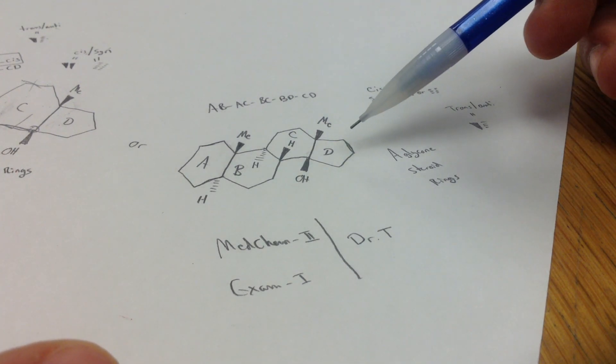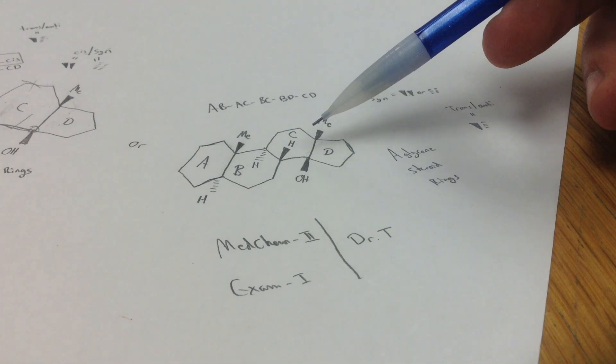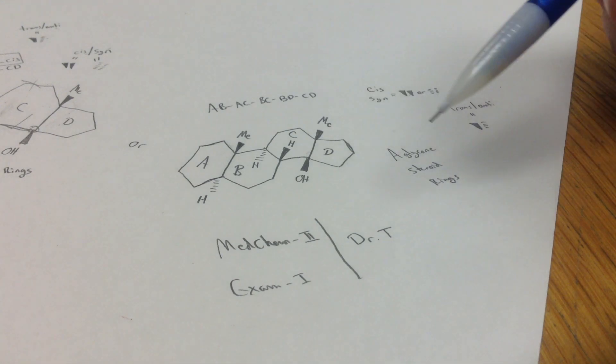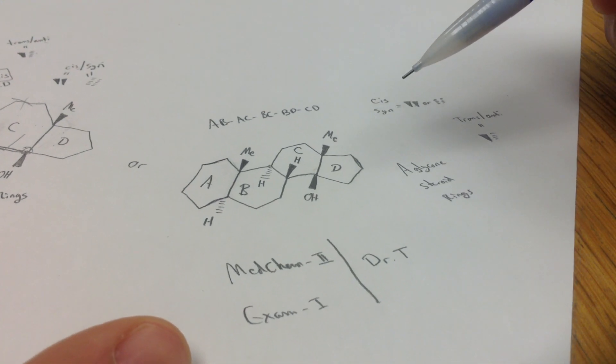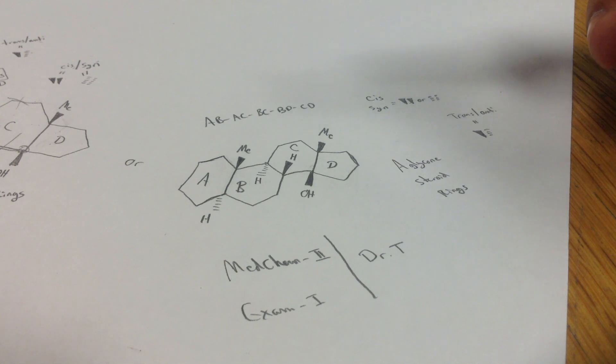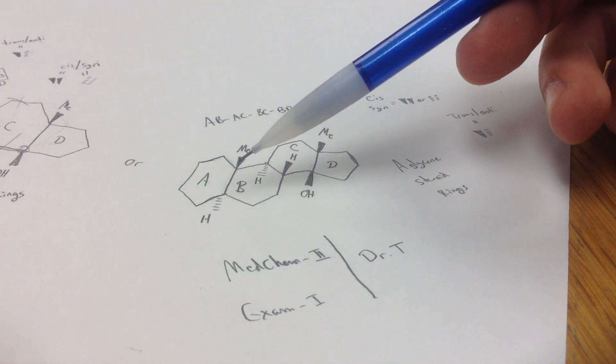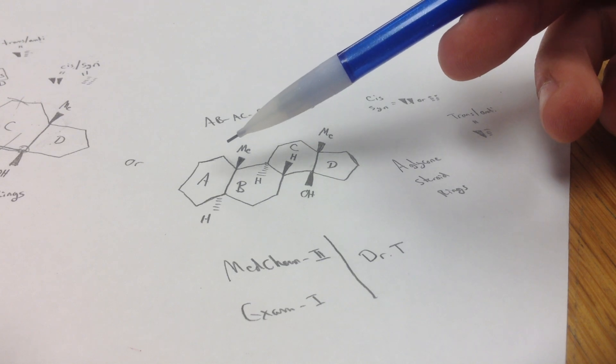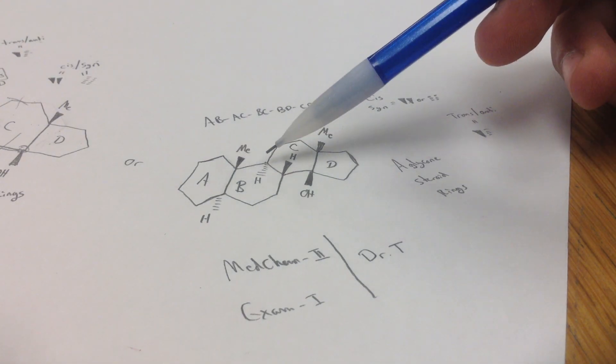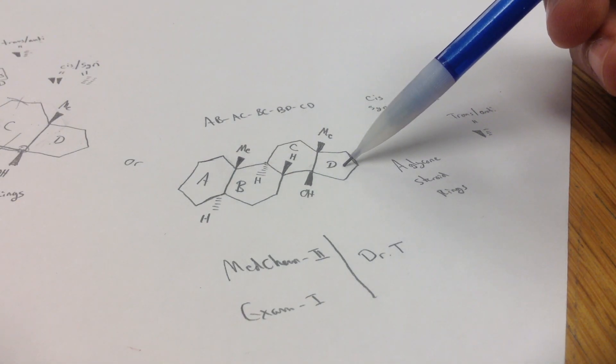So basically you have a steroid ring here for an aglycone, and the questions that he likes to ask, similar to number one, are how to name the different bonding interactions here. So you have a ring system here with three 6-carbon rings and one 5-carbon ring.